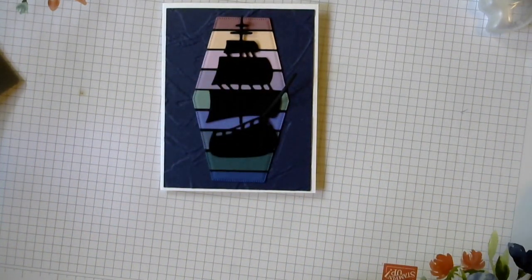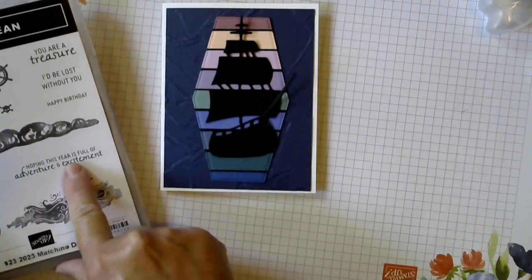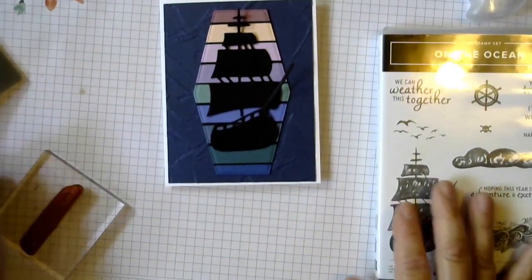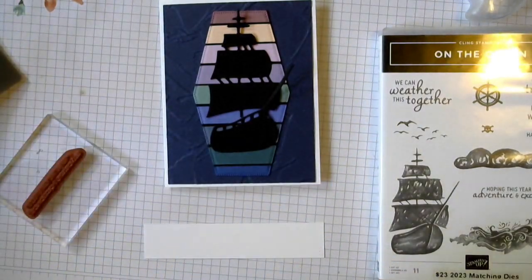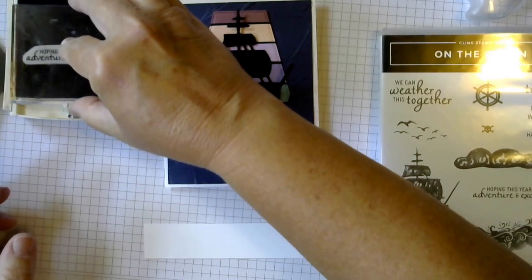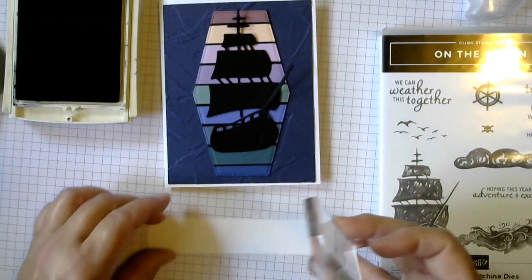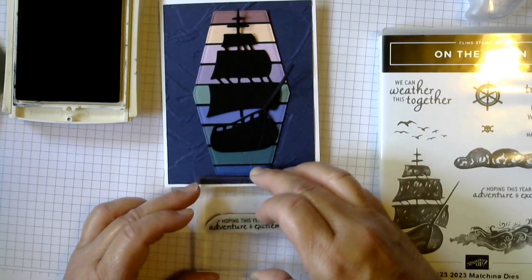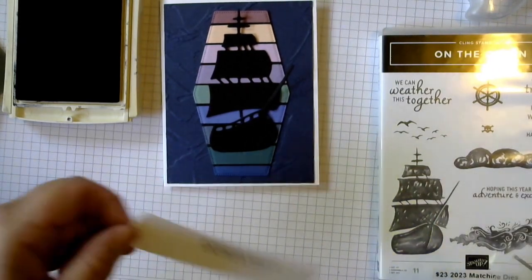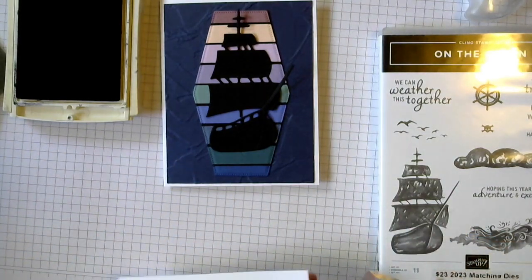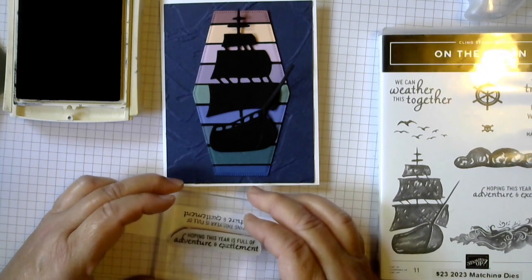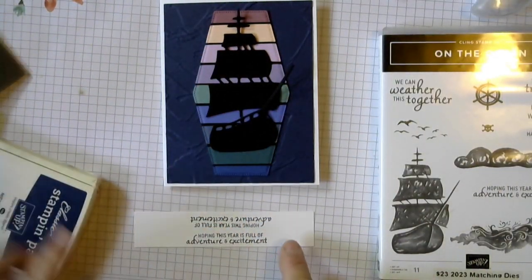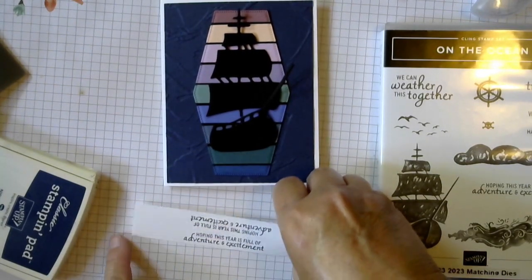We're going to probably put a birthday greeting across the bottom so let's keep it up a little bit. Maybe we should do our greeting first so we know exactly where it needs to go. Let's do this hoping this year is full of adventure and excitement. I think we want that on a piece of white. So we'll do this in Night of Navy. Nice dark blue, it's almost sometimes it almost looks black. Let's stamp this. Oh, I forgot. This stamp is mounted crooked so I need to tip it down. I hate when that happens. There we go.